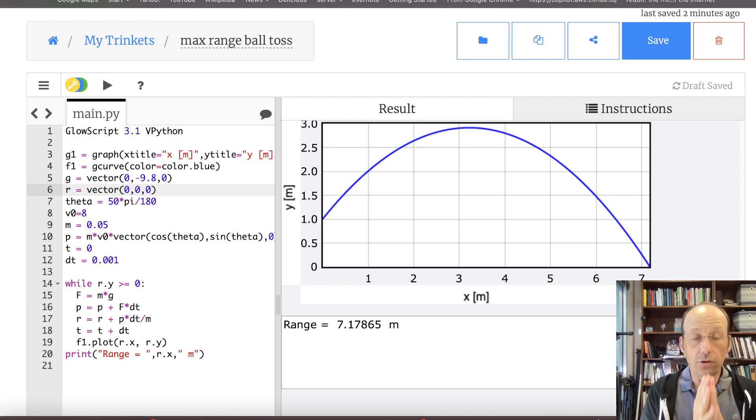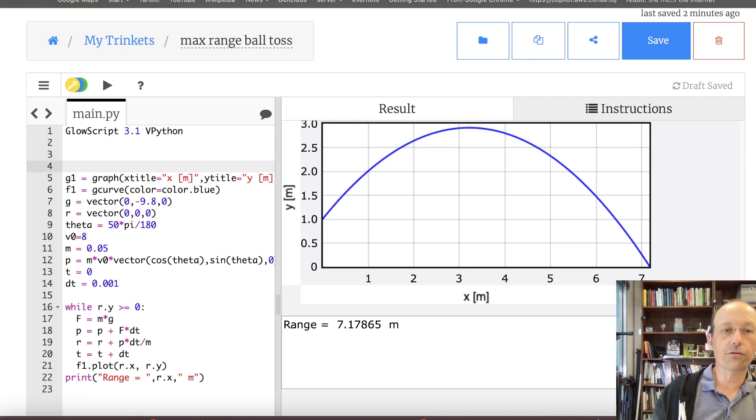Now what I want to do is to make a graph of the range as a function of launch angle. And then we can see if that is indeed the case. And in order to do that, I need to run all this code multiple times. I think I'm going to just do this function today. And then I will make another one with air drag later, just because I don't want to be too long.